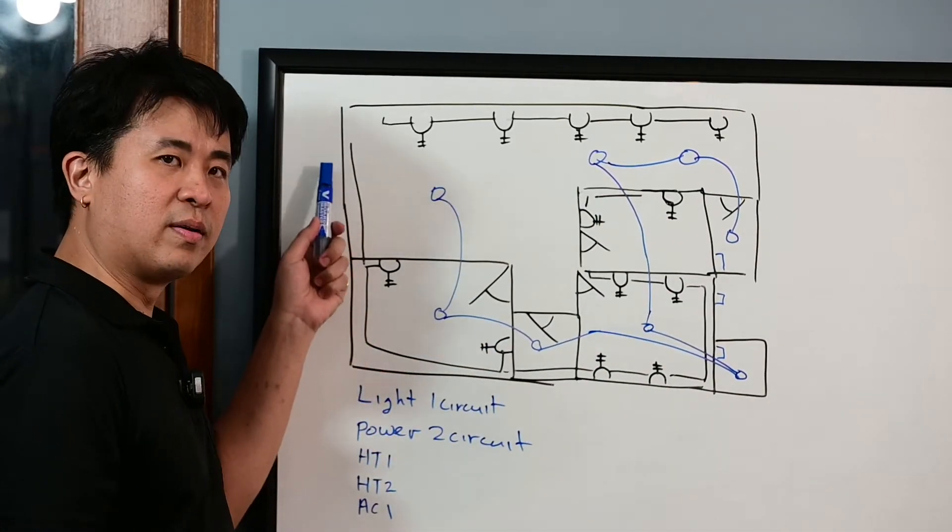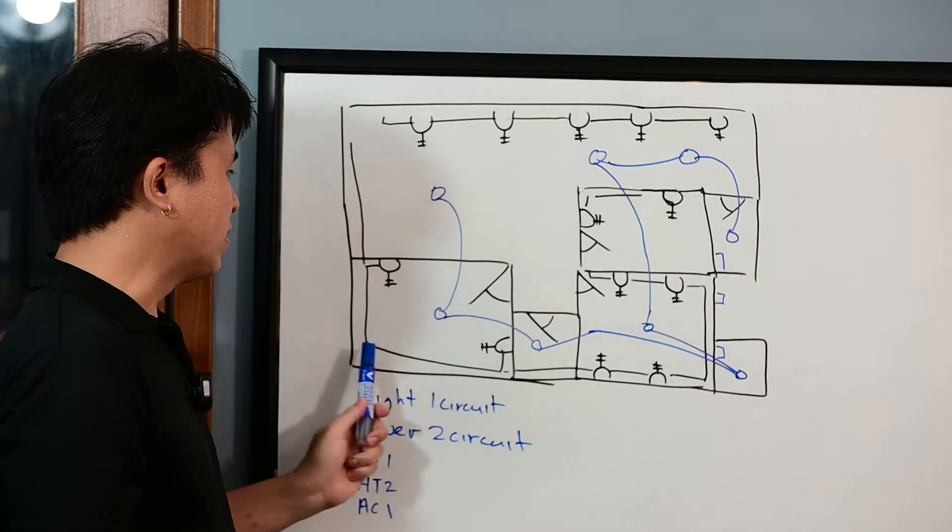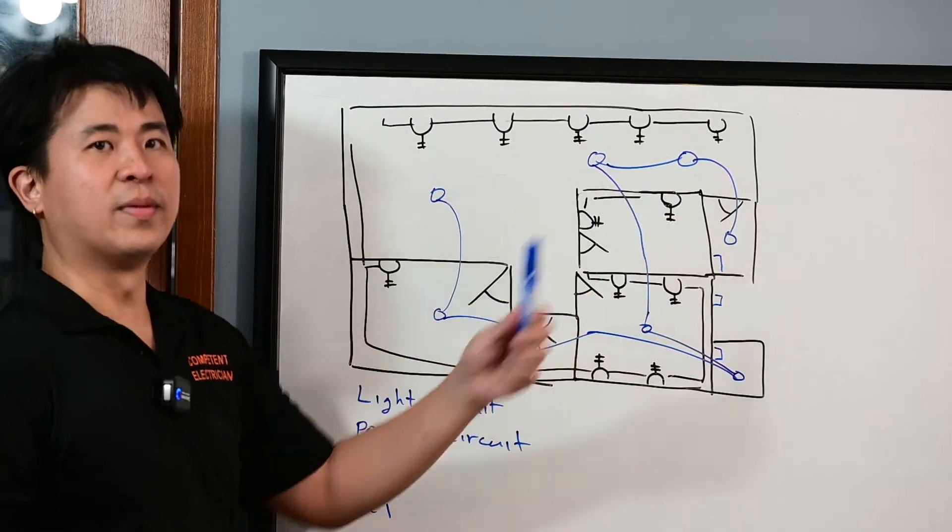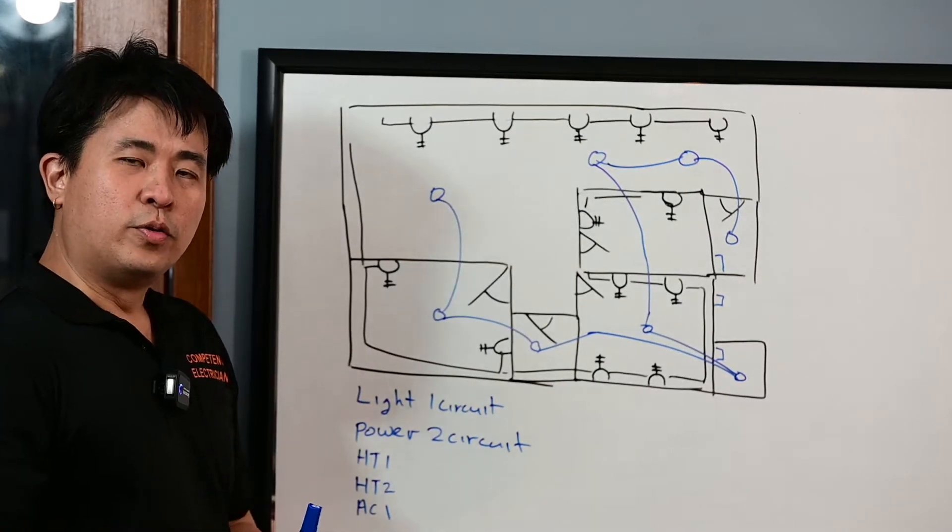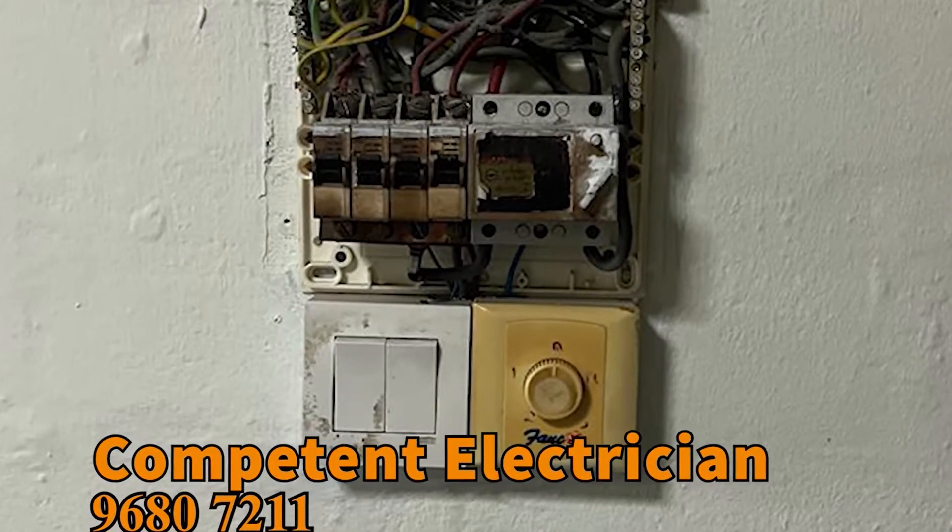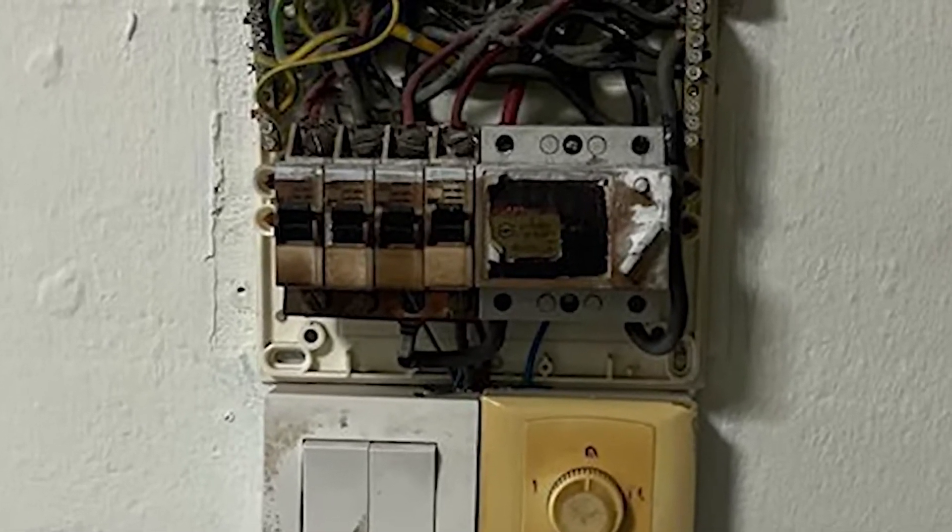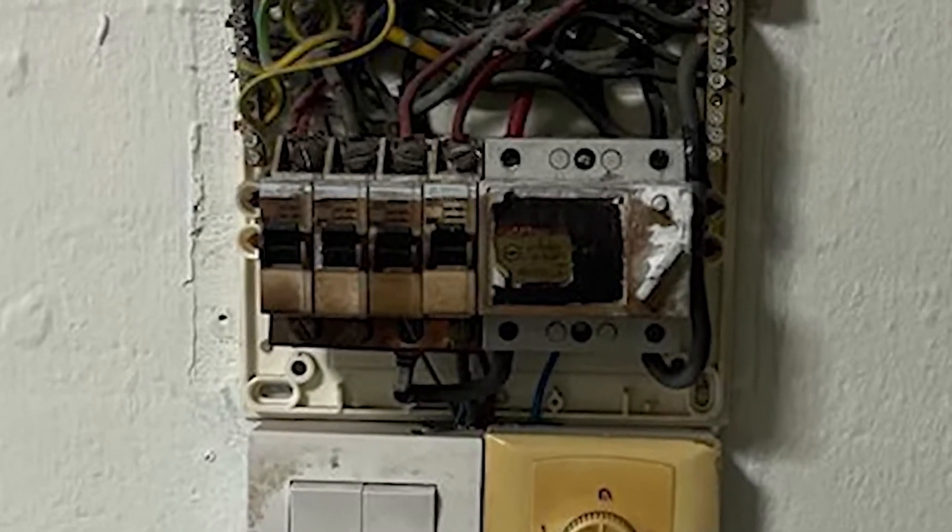Followed by the power socket outlets which only have two circuits - one serving the entire bedroom and one serving the living room and the kitchen. This was always used in the 1980s and 1970s, where you can see the distribution box is very small and it only consists of a few circuit breakers.